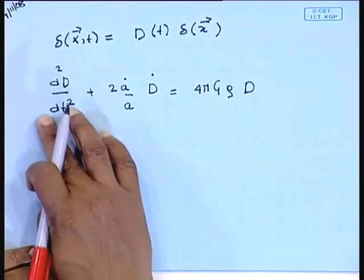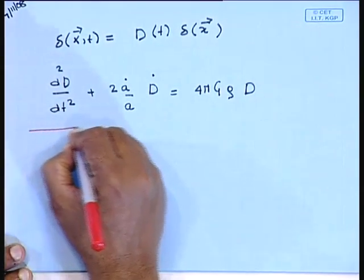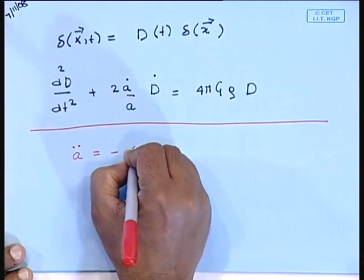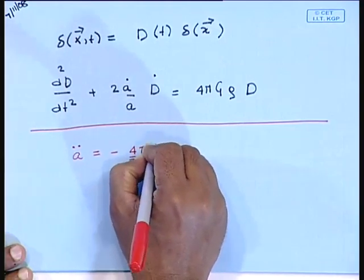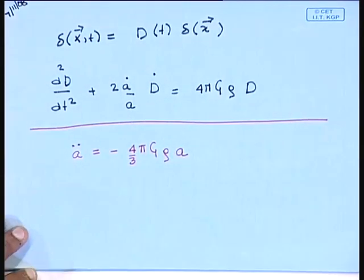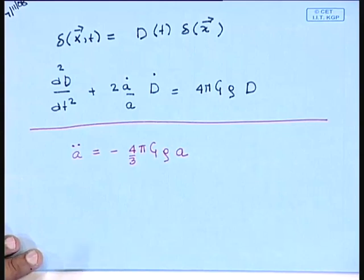What I had told you in the last class was that the way to generate solutions to this equation is to consider the evolution of the background, which is governed by ä = −(4/3)πGρa. This is a second-order differential equation. When I integrate it twice to get a as a function of t, there will be constants of integration, and by varying these constants I can get different solutions — in principle an infinite number.